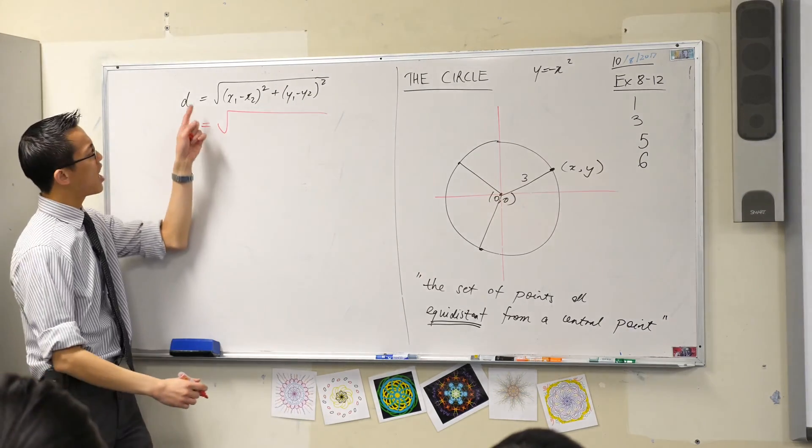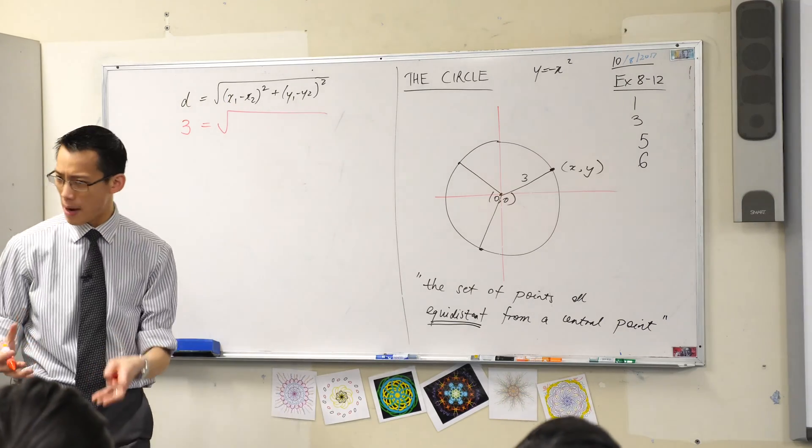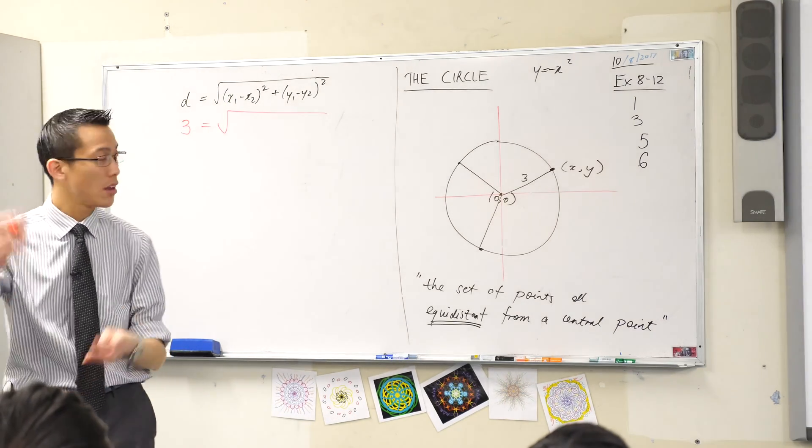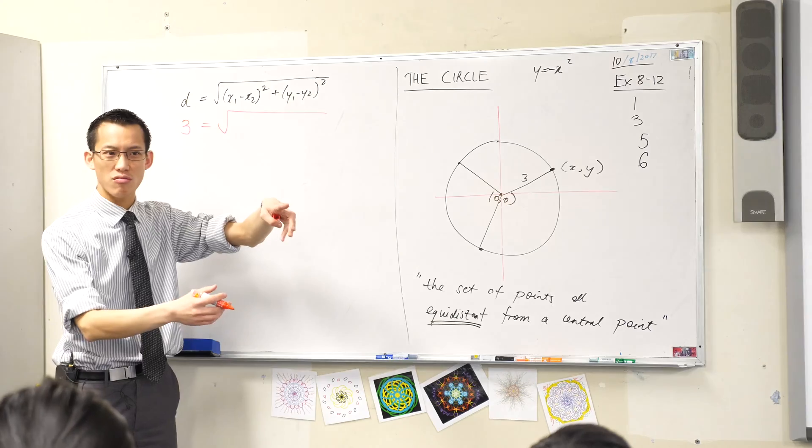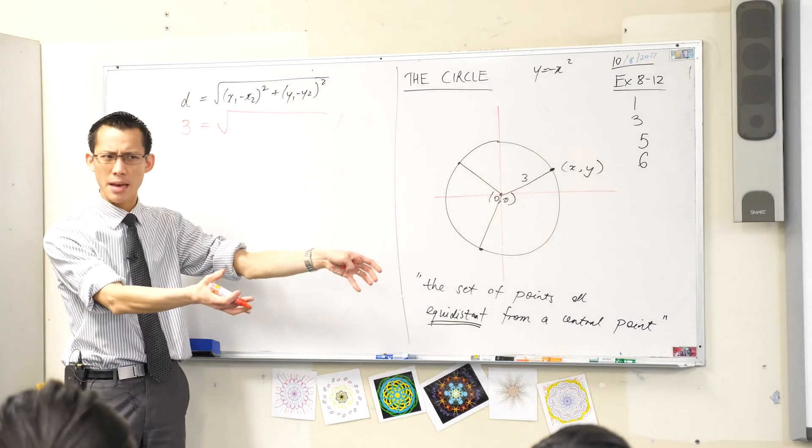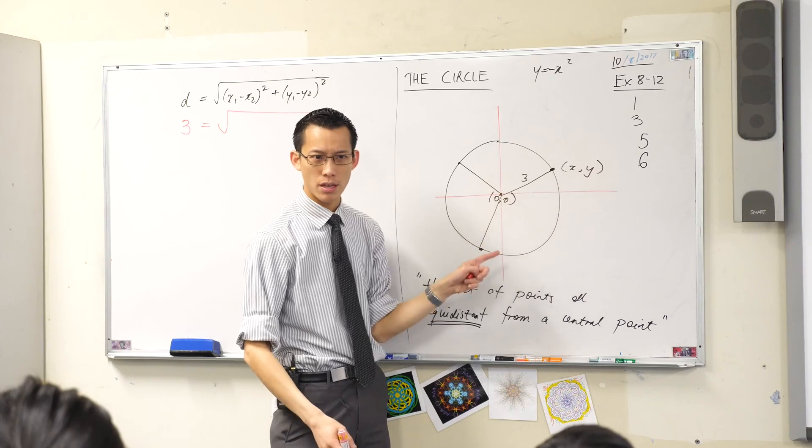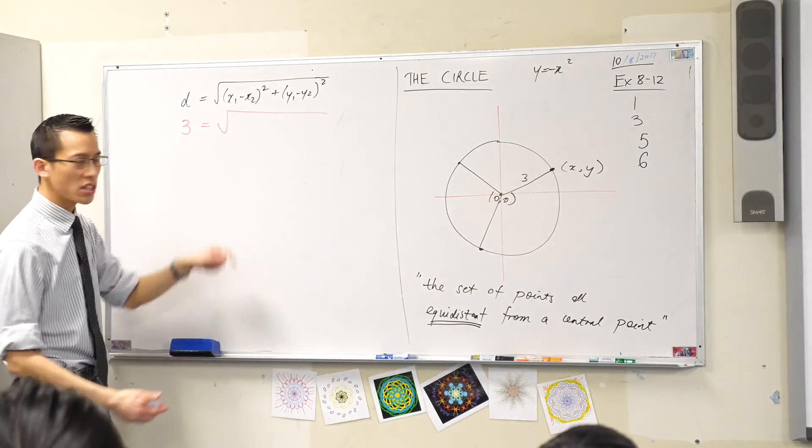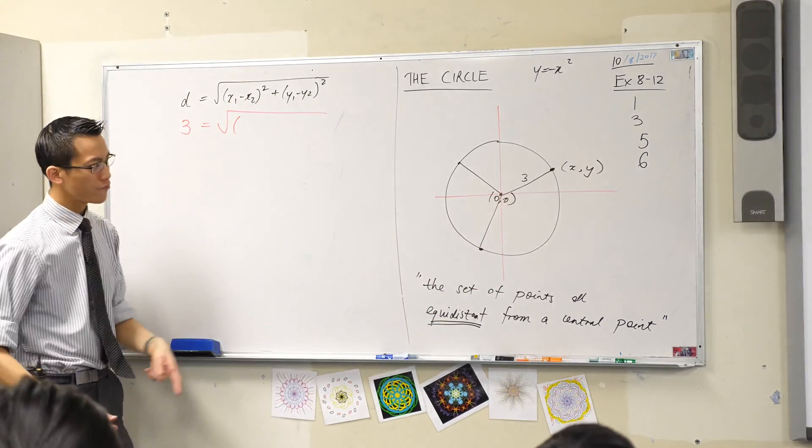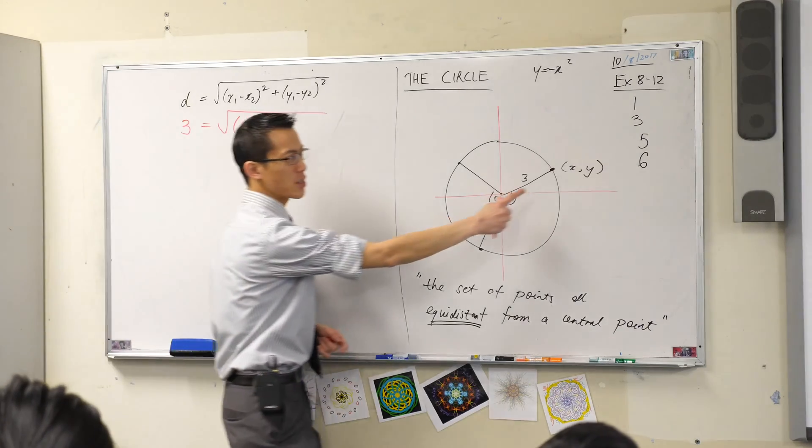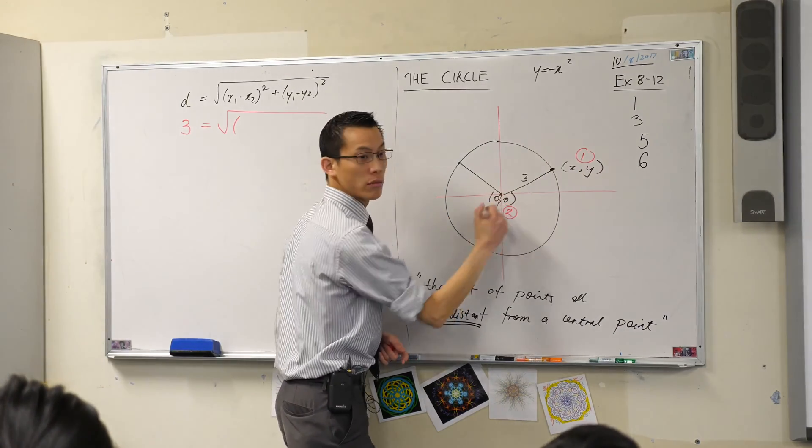Well, x₁, y₁—that's just a pair of coordinates, right? Some point. And x₂, y₂ are just the coordinates of some other point. Does that make sense? But look, I've got two points here. So my coordinates are going to look something like this. Let's make this one the first point and this one the second point.